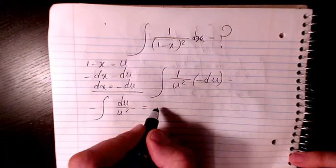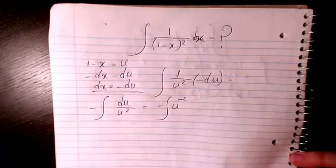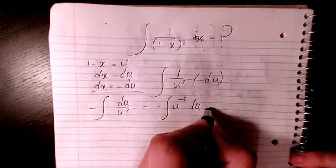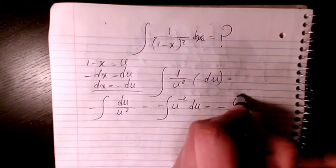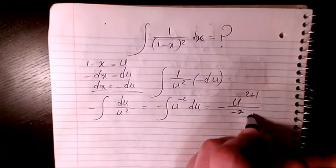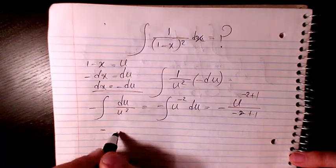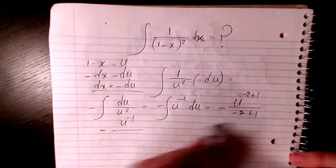The integration of this, it's the same as negative u⁻² du. So I will have negative 2 plus 1 divided by negative 2 plus 1, so I have negative u to the power of negative 1, and here I have negative 1.